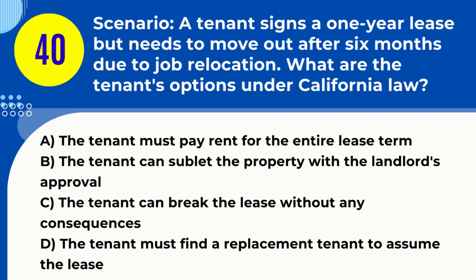Question 40. Scenario: A tenant signs a one-year lease but needs to move out after six months due to job relocation. What are the tenant's options under California law? A. The tenant must pay rent for the entire lease term. B. The tenant can sublet the property with the landlord's approval. C. The tenant can break the lease without any consequences. D. The tenant must find a replacement tenant to assume the lease. Answer: B. Explanation. Under California law, if a tenant needs to move out before the lease term ends due to job relocation, they can potentially sublet the property, subject to the landlord's approval. The tenant remains responsible for the lease terms and rent payment unless a new agreement is made.